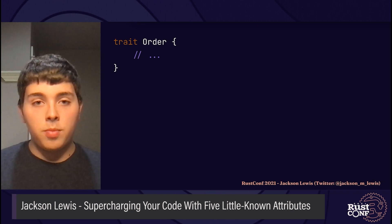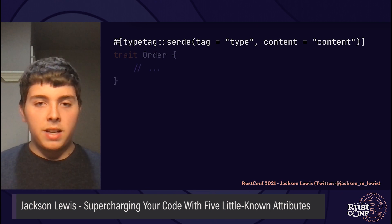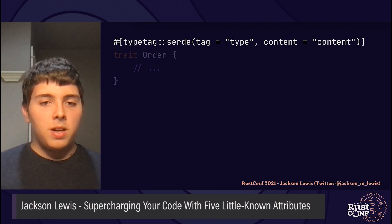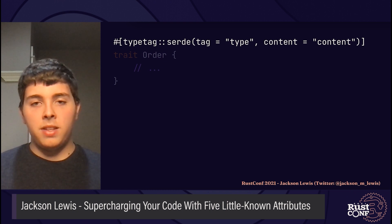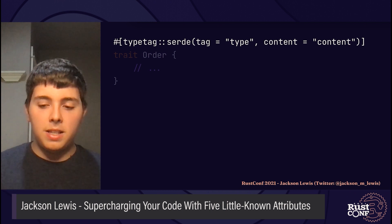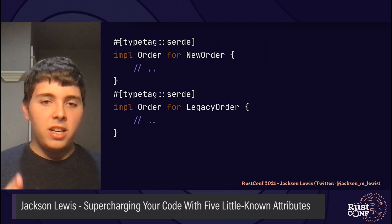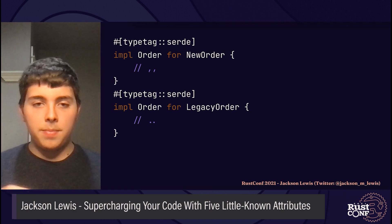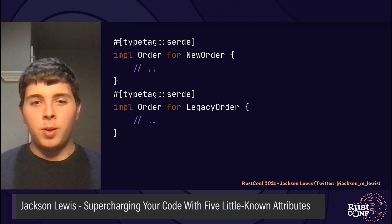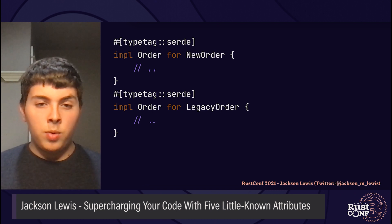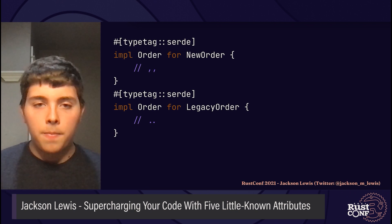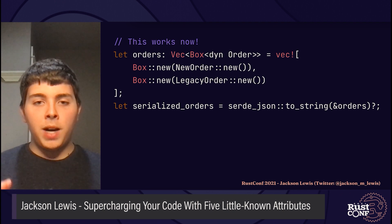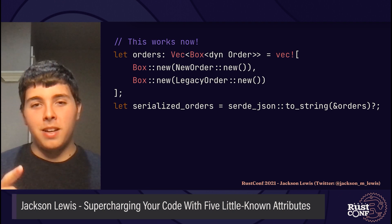In order to serialize and deserialize an arbitrary object of this trait, we're going to need the third-party typetag attribute. Typetag lets you serialize a trait object as an enum, where each variant is an implementer of that trait, and the content is the serialized version of that implementer. You specify the names of the tag fields — in this case, type and content. As long as each implementation of Order implements Serialize and Deserialize themselves, we can use typetag to make them serializable as trait objects, just by putting the attribute above each implementation. This works even if the implementations are in different crates. And that's the power of typetag.